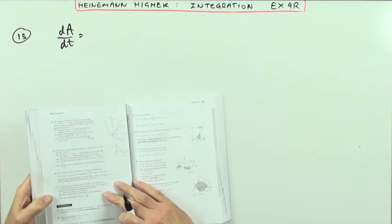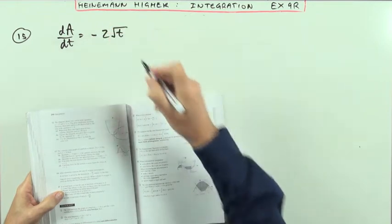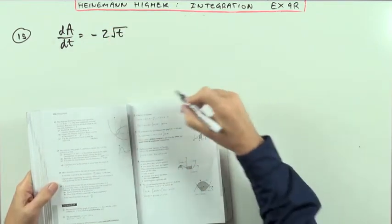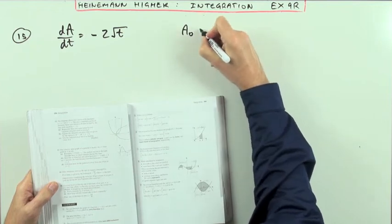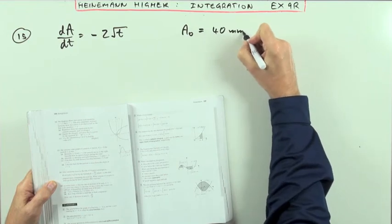The rate of decrease of its area is given by 2√t, but it's a rate of decrease, so that must be a negative amount, where t is the time in days. It's got an initial area, and I'll just call that A₀, common notation for the area at time zero of 40 square millimeters.